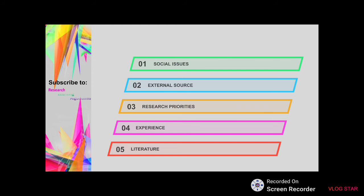The fifth source is literature. One of the most common ways researchers look for problems to study is by conducting a systematic review of the literature. After finding out that there is a literature gap, there is a need to do rigorous research on that particular gap. There is no end to literature gaps due to the wide body of existing literature.